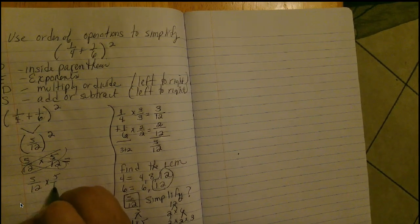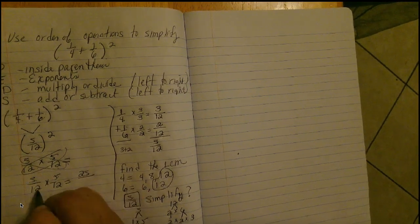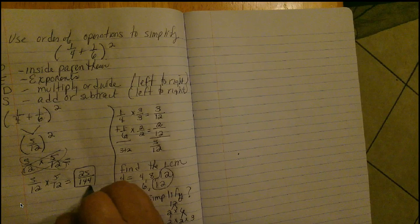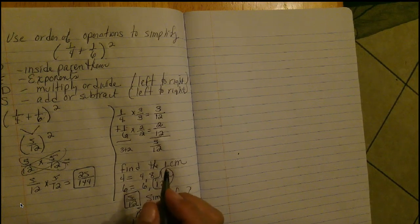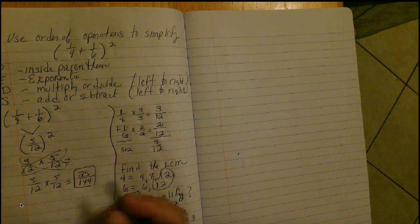Copy it over. Five times five is twenty-five. Twelve times twelve is one hundred forty-four. I know that is my answer because I already tried to reduce and simplify.